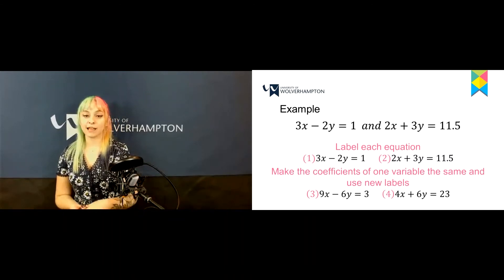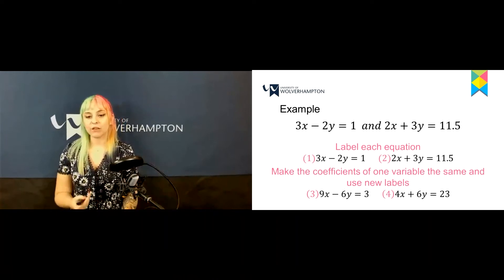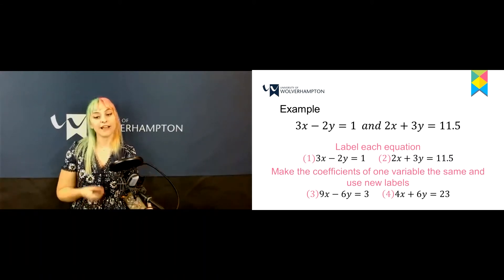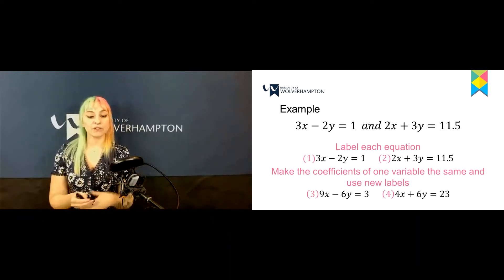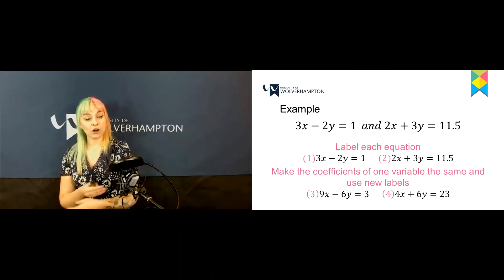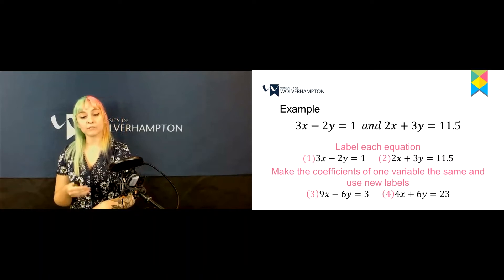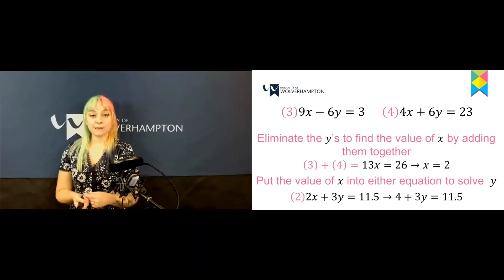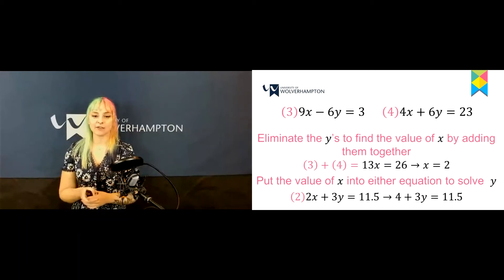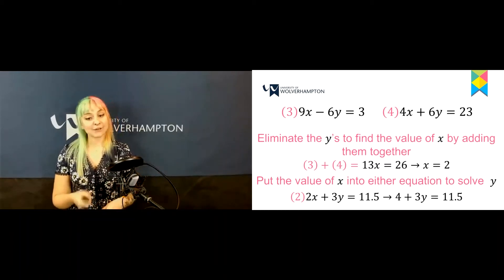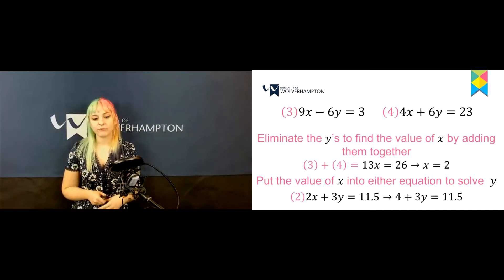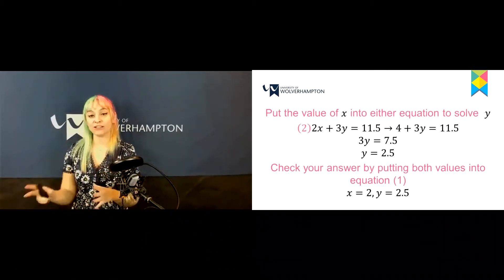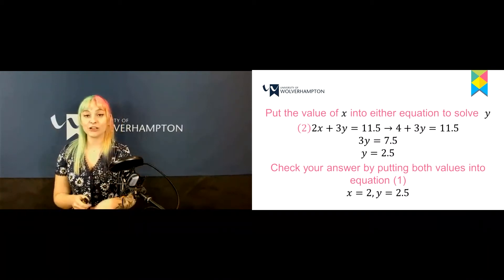Label each equation 1 and 2. Make the coefficients of y the same by multiplying equation 1 by 3 and equation 2 by 2, labelling these equations 3 and 4. Adding them together eliminates y and gives 13x equals 26, so x equals 2. Substitute this x value back into one of the original equations to find y. Check your answer by substituting all values back into your equations.